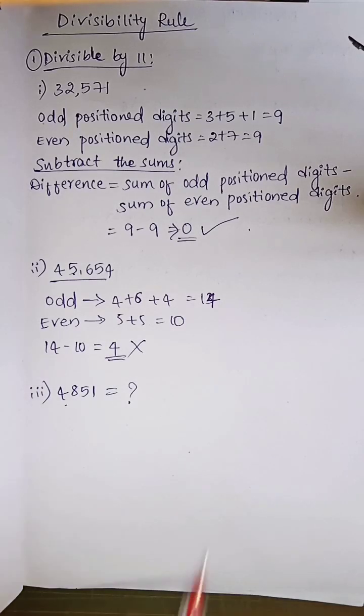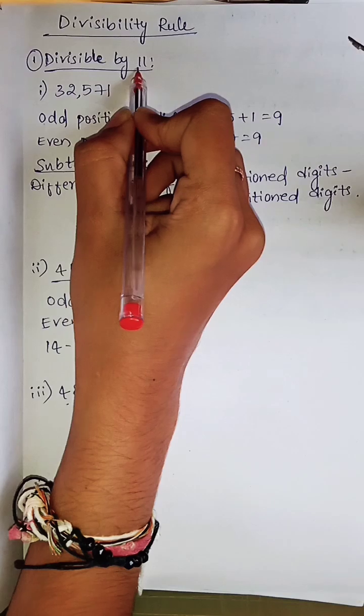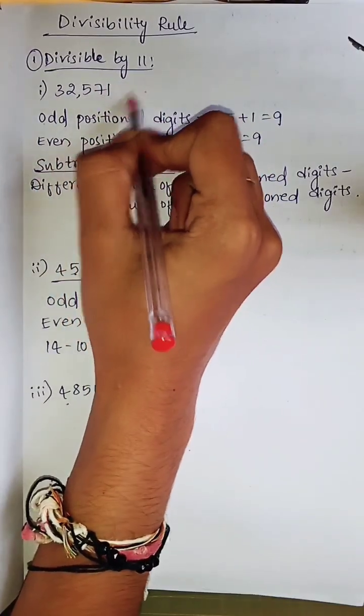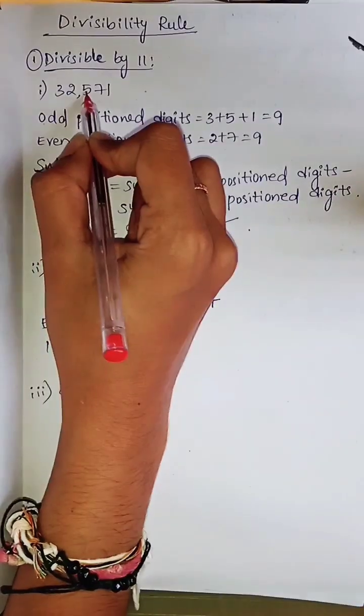Hello everyone, let's see the divisibility rule in this video, which is divisible by 11. 32571 - whether it is divisible by 11 or not. Odd position digits are 3, 5, and 1.